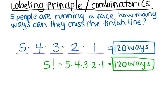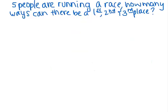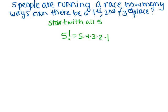Now, what if we change it up a little bit? I have five people running a race, and I want to know how many ways can there be a first place winner, a second place winner, and a third place winner. I don't really care about fourth and fifth place. The best way to do this is to start with all five. So we start with how to order all five, which we just did — that's going to be five factorial. Because I only care about a certain number of people, I want to do some division here to get rid of the things that I don't care about.